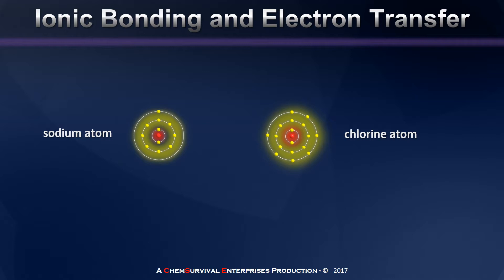The answer to that question lies in two specific traits. The first is the electronegativity of these elements. Notice that sodium's electronegativity of 0.9 is much much lower than chlorine atom's electronegativity of 3.0. This means that chlorine atoms have a very strong desire to obtain electrons, while sodium atoms have a very strong desire to give one up.